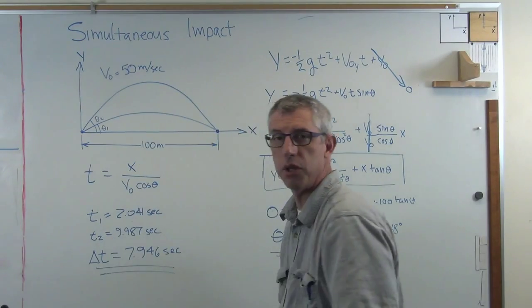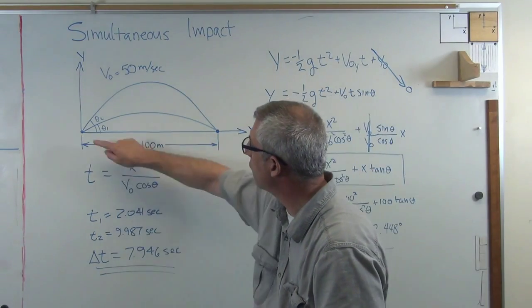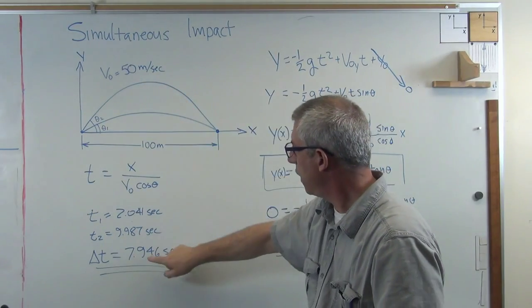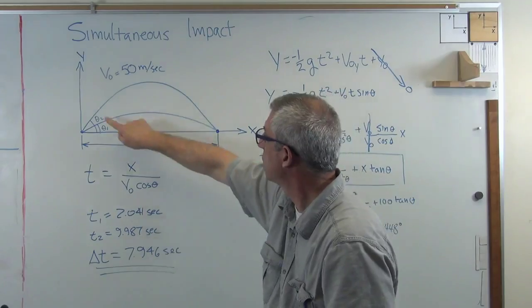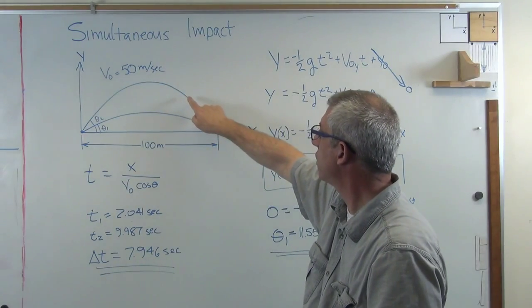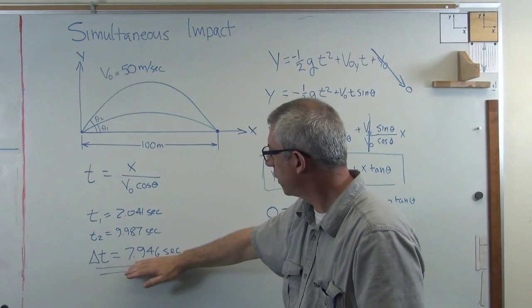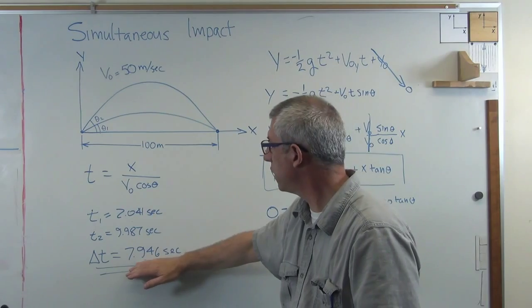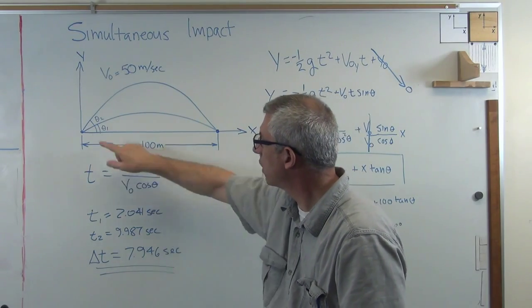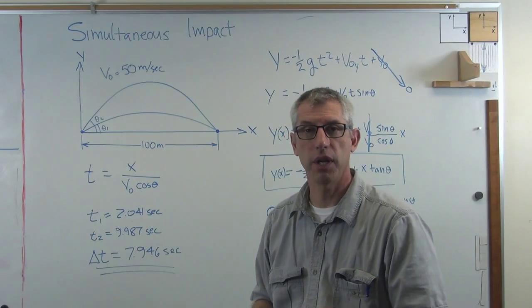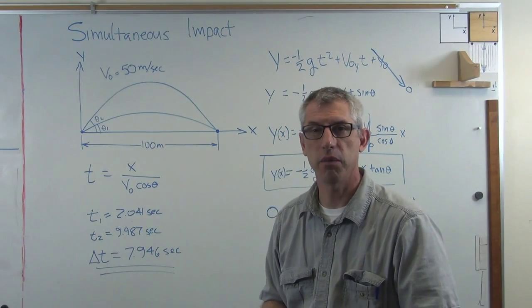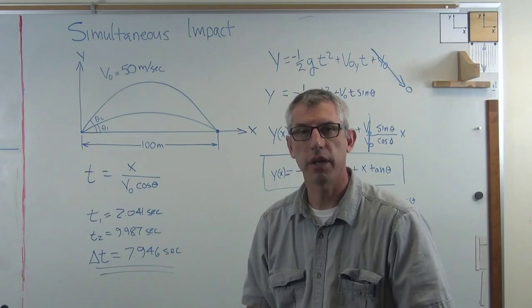Okay, and that's the final solution. So what I've found out is, if I launch along the high path, and then wait 7.946 seconds, okay, so the ball's in the air, hasn't gotten to the target yet, and 7.946 seconds after launching the high solution, I launch along the low solution, both balls will get to the target at the same time, and that's simultaneous impact. I hope this helps, and I'll see you next time.